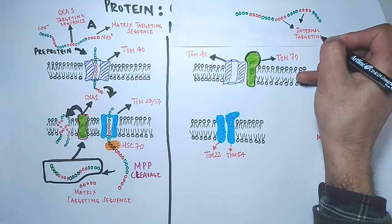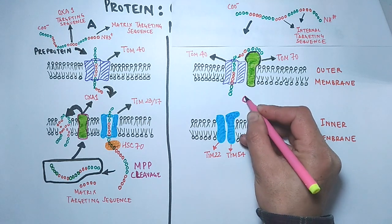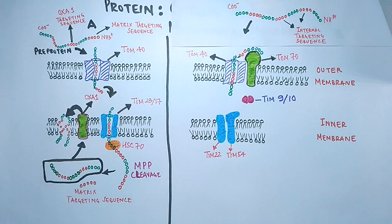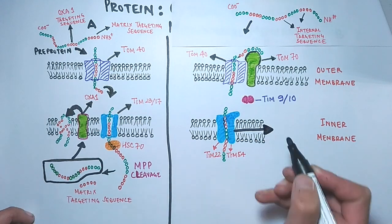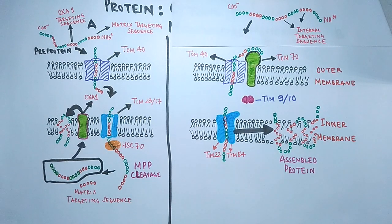In this pathway, pre-proteins with internal targeting sequences are recognized by TOM70, which then directs proteins into the TOM40 pore and transports them into the inter-membrane space. Transport across the inter-membrane space is mediated by inter-membrane space translocons called the TIM9/10 complex. This complex helps transport proteins towards the inner membrane translocon, the TIM22/54 complex. Finally, the TIM22 complex targets the protein into the inner mitochondrial membrane to its final destination. Note that transport of hydrophobic precursor proteins is mediated by the TIM9/10 complex in the inter-membrane space.